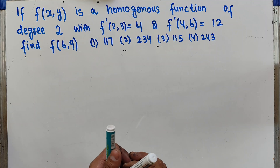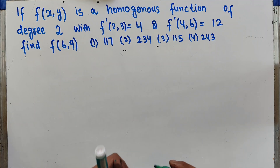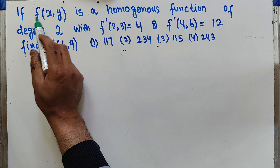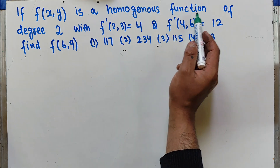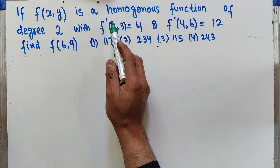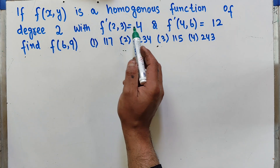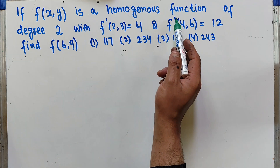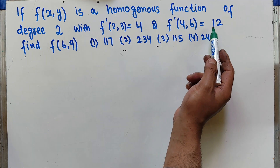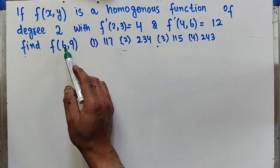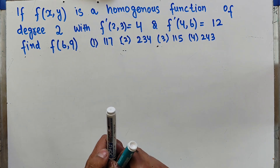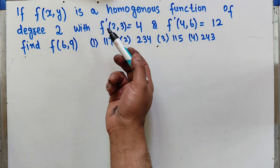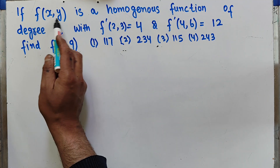The question is on homogeneous functions. If f(x,y) is a homogeneous function of degree 2, with f'₁(2,3) = 4 and f'₂(4,6) = 12, find f(6,9). Options are being given and we need to find out the correct option.